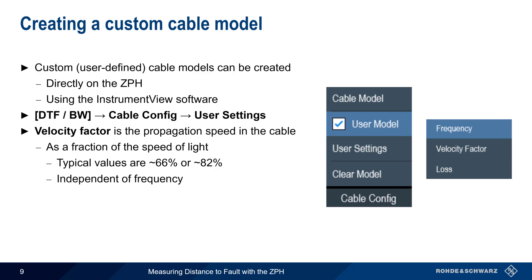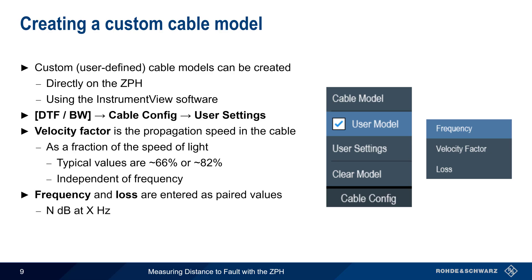The velocity factor value is independent of frequency. The cable loss, or attenuation, is specified as paired values of frequency and attenuation — that is, N dB at X Hertz. The ZPH will interpolate between entered values. When done, press User Model to apply the settings.